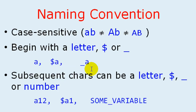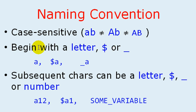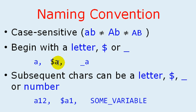Java has some restrictions on the names that we give to variables. The names are case sensitive — for example, small 'ab' is not equal to uppercase 'AB', so they are two different variables. The names should always begin with either a letter, a dollar symbol, or an underscore. A correct variable name would be: $a, or _a.